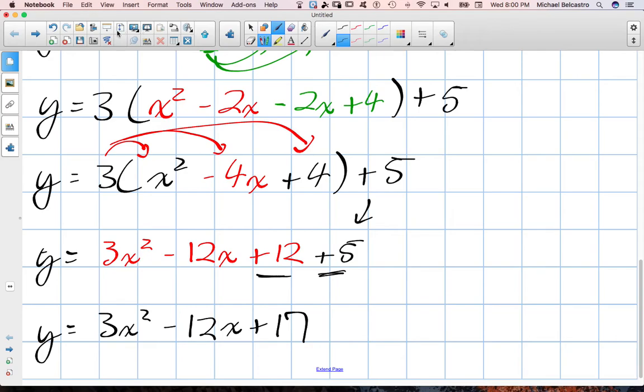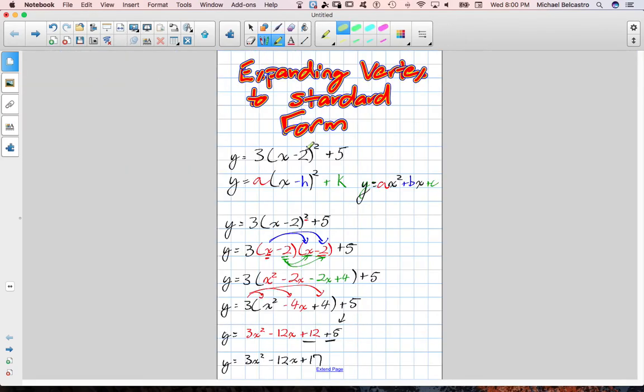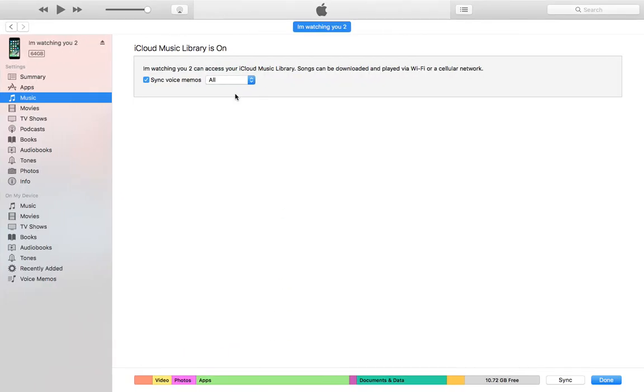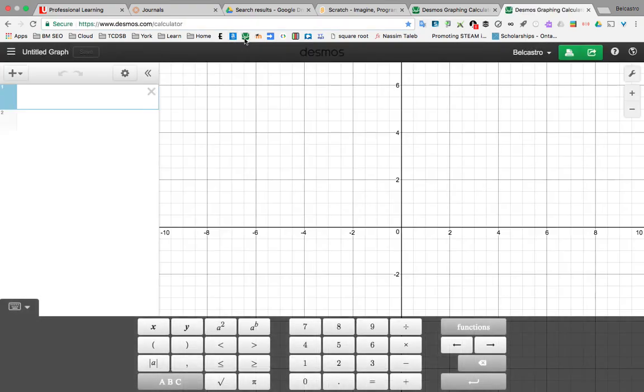So according to this, what I've written here, this form here is the vertex form of this standard form. So in other words, these are the exact same parabola. Let's see if I can prove it. There goes my iTunes problems.